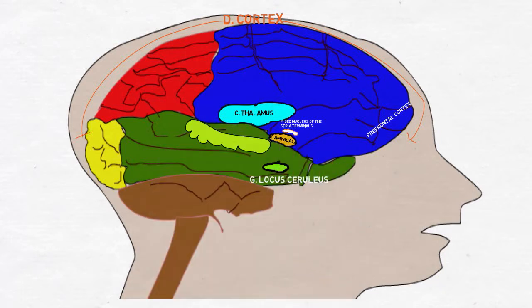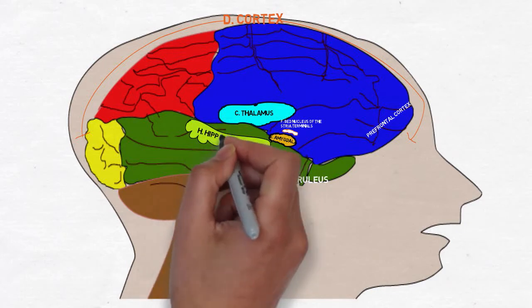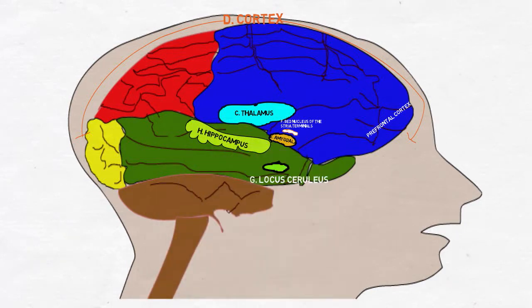The hippocampus is your memory center, storing raw information from the senses, along with emotional baggage attached to the data by the amygdala.